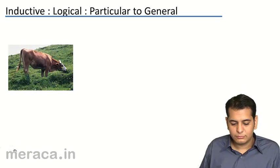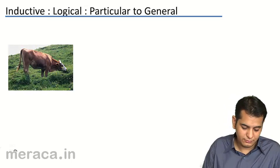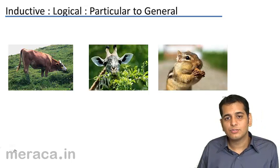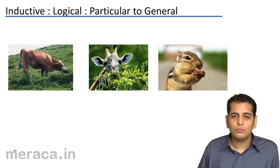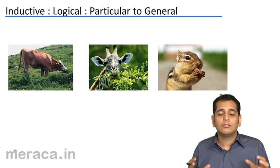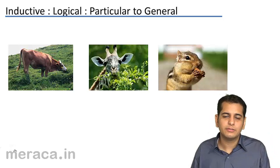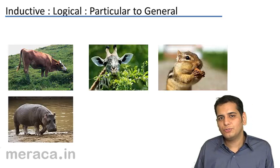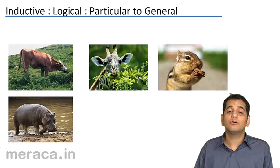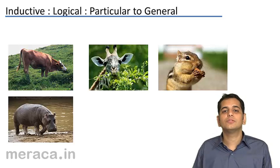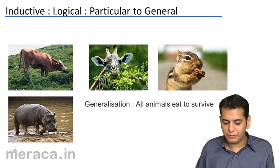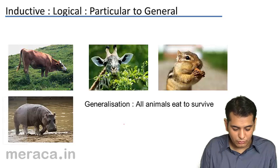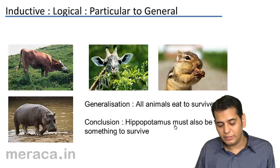Now let's look at the inductive method. In this picture you see a cow grazing, next a giraffe having leaves, and finally a squirrel eating nuts. Adding up all these pictures, the conclusion I draw is: all animals eat — they need something to eat to survive. So if I show you a hippopotamus picture, will you infer that the hippopotamus would also be eating? Yes, and that is the conclusion drawn.